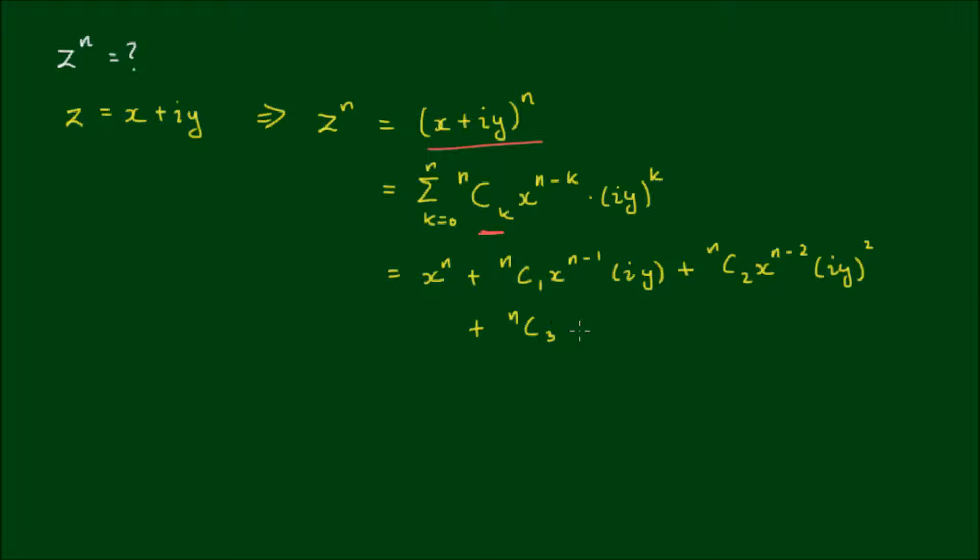Plus nc3 by x to the power of n minus 3 times iy to the power of 3 and so on. So as you can see, depending on the degree n, this can be quite lengthy and it would be quite tedious to evaluate. Using powers of complex numbers in Cartesian form is not very efficient. We can do a lot better if we convert to polar form. So if we write z is equal to r cis theta.